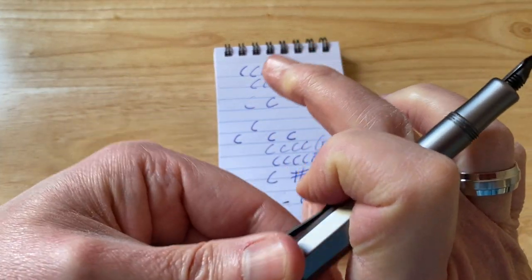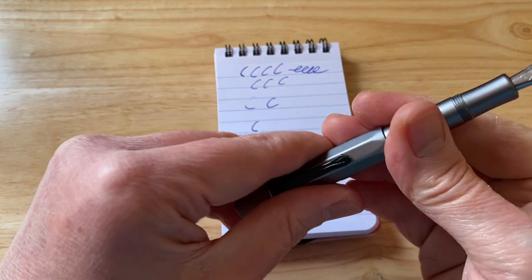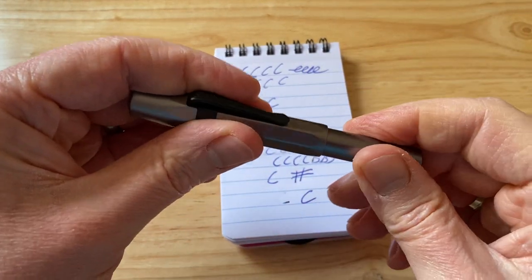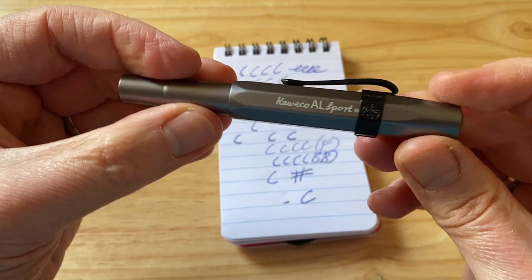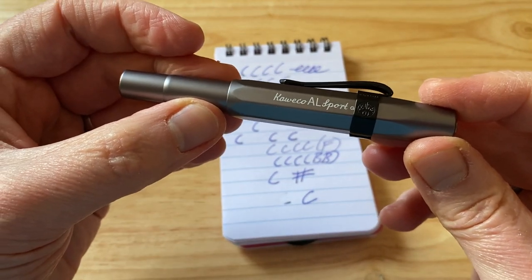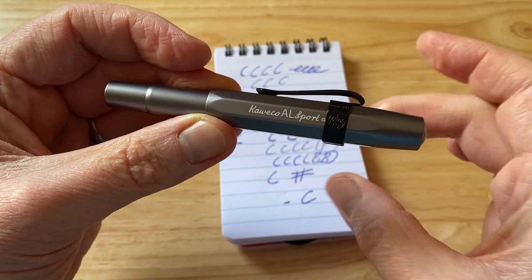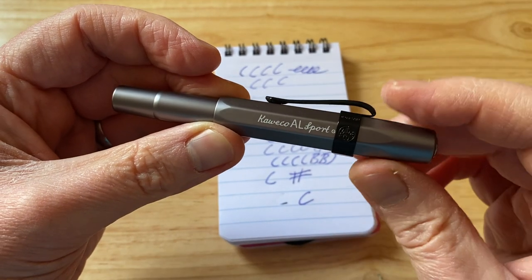So, there we have the Caveco Sport Anthracite. Now, don't let this nib put you off if you are thinking of buying one of these pens. Because, just choose a medium nib or a fine, or an extra fine. But, it is interesting to see how these double broad nibs perform on paper.